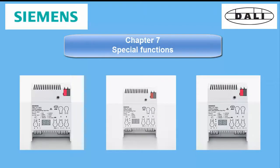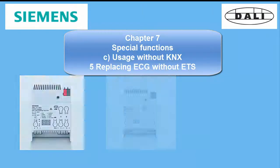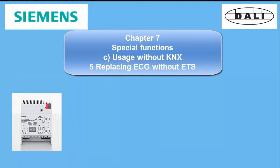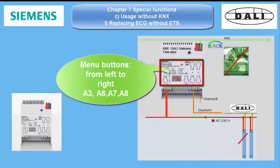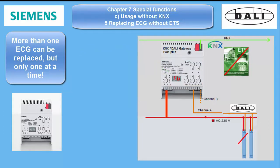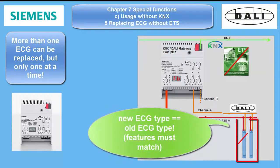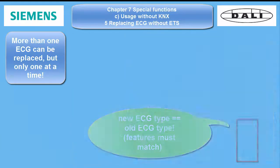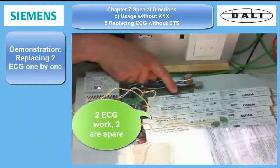Replacing ECG without ETS. The Gateway supports this mode when the front side menu buttons are pressed according to the BMA to get into the replacement mode. You can replace more than one defective ECG, but only one at a time. You have to make sure that the replacement device is identical with the defective ECG. Please see BMA for how to do it. I demonstrate it in this short video now.